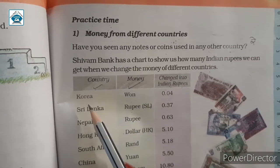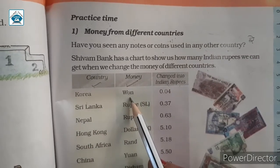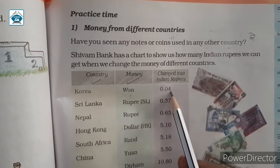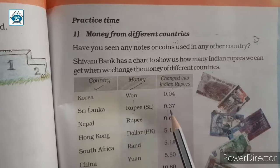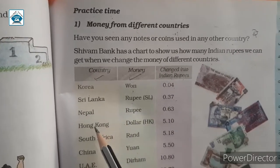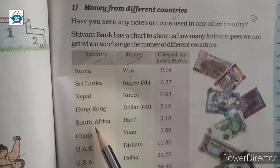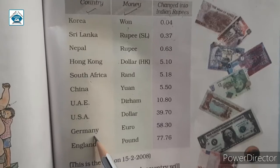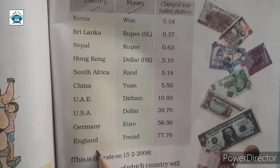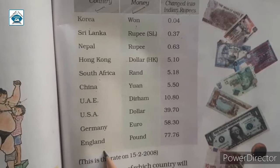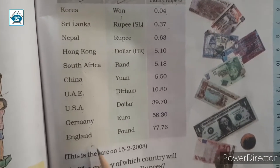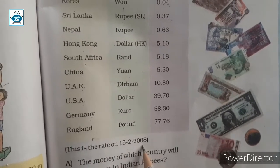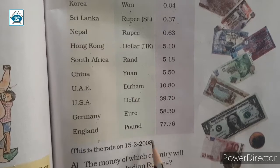First, Korea — money: won, and one won makes 0.04 rupees. Sri Lanka rupees: 0.37. Similarly Nepal, Hong Kong, South Africa, China, UAE, USA, Germany, and England. All these rupee values are recorded as of 15 February 2008, meaning these are past records.